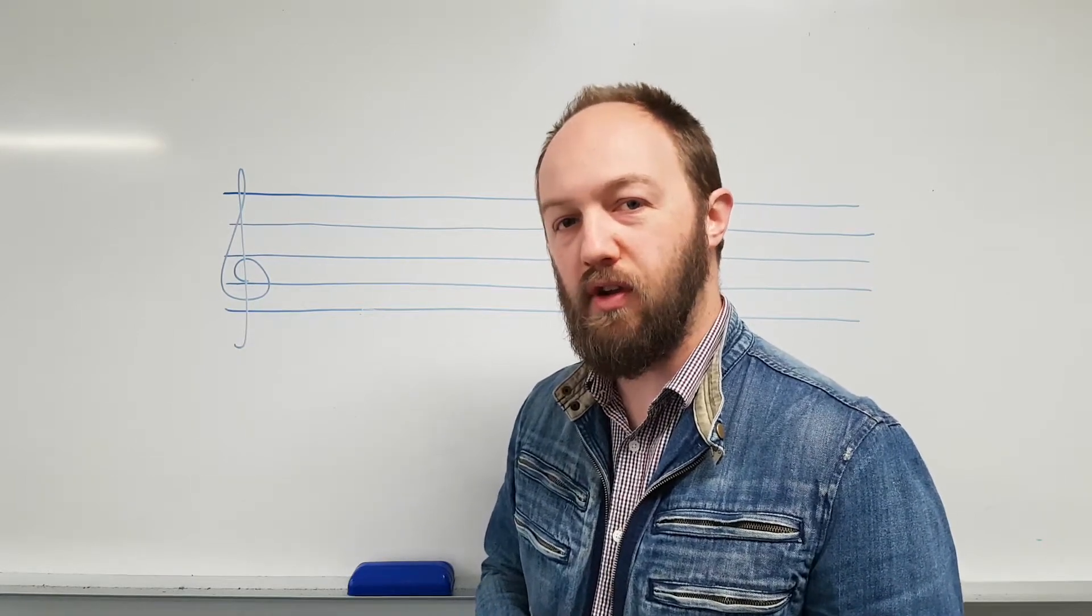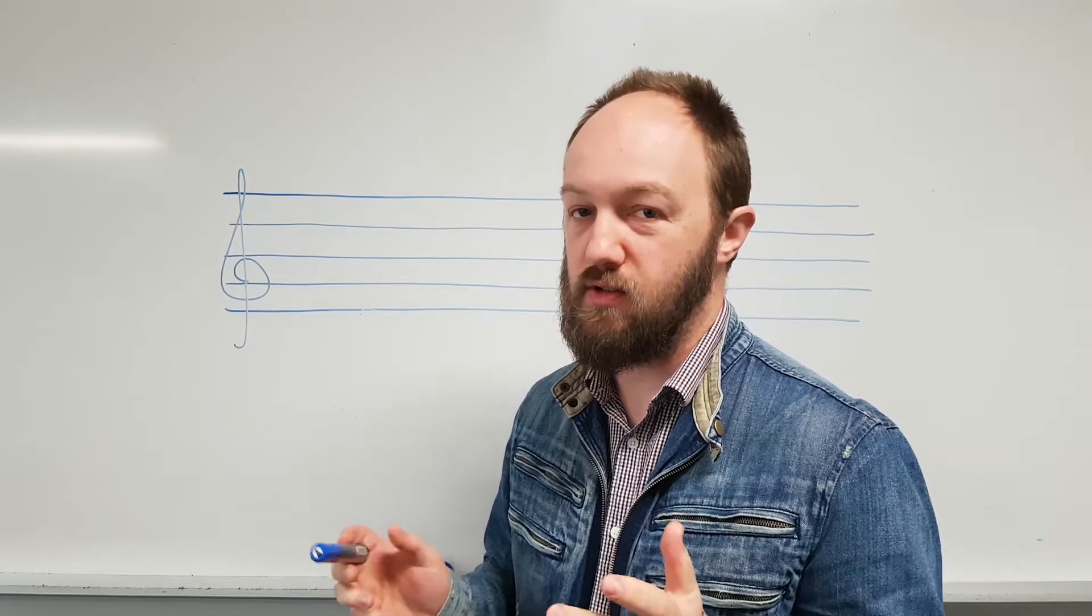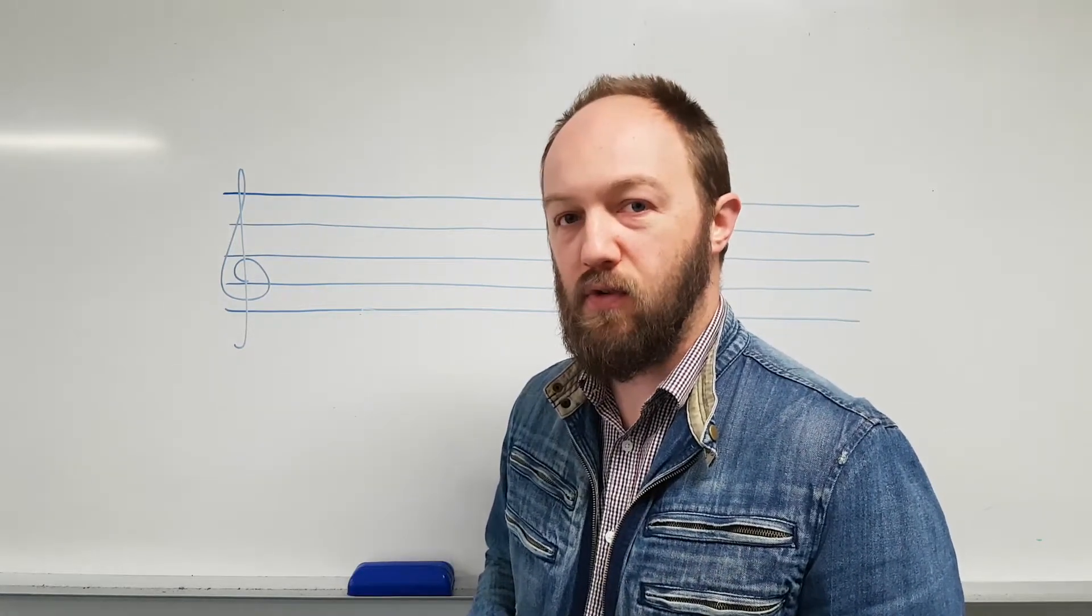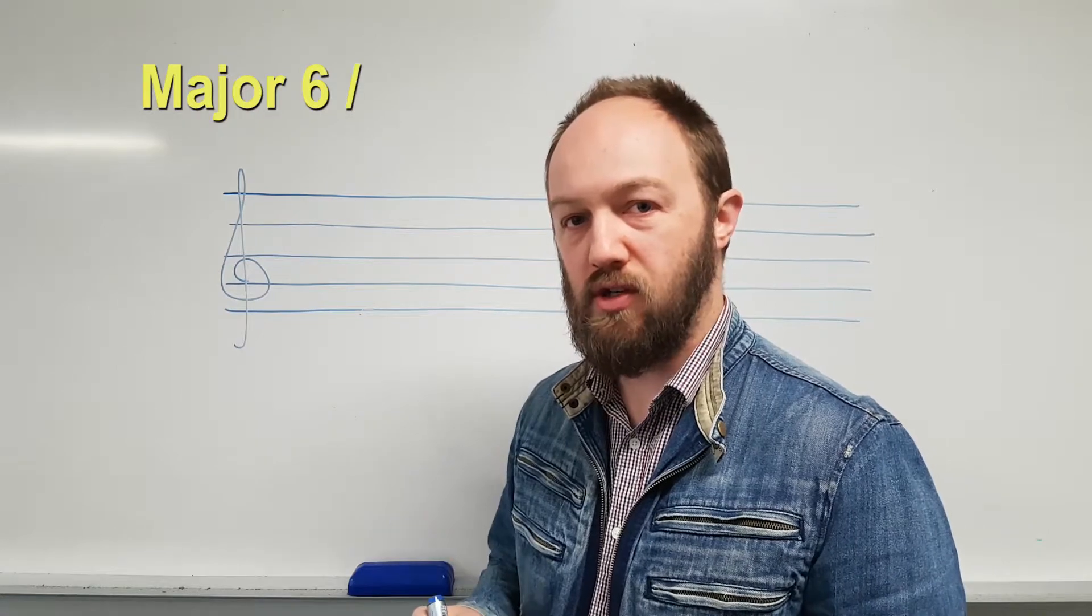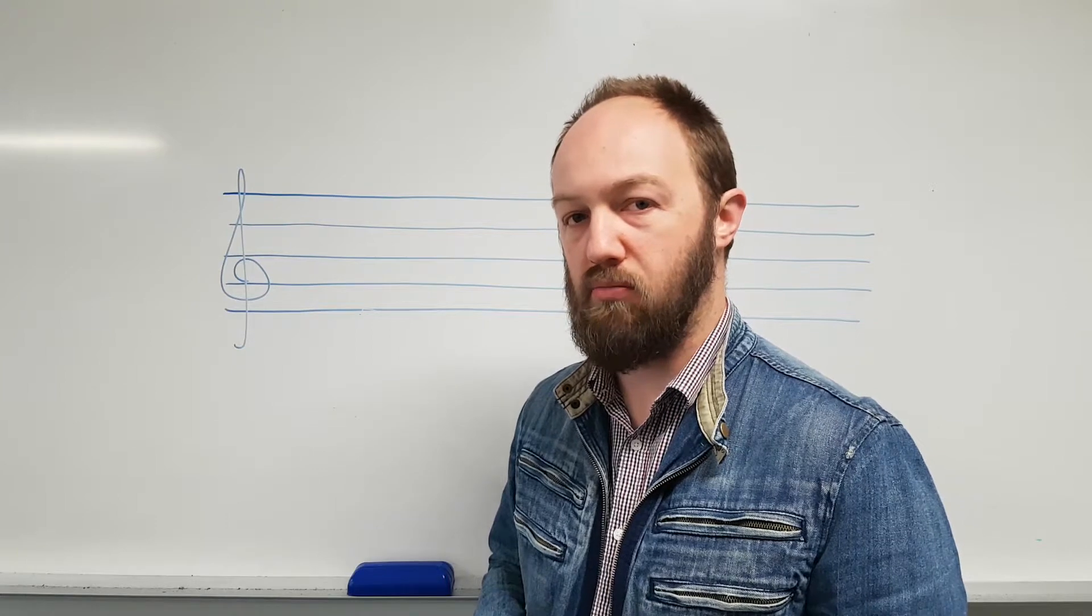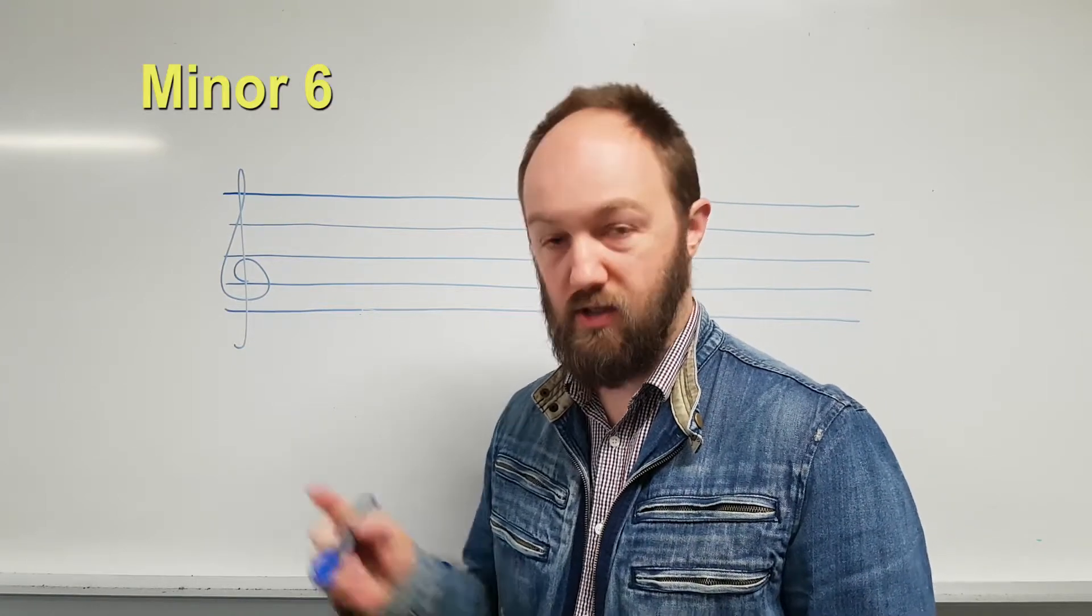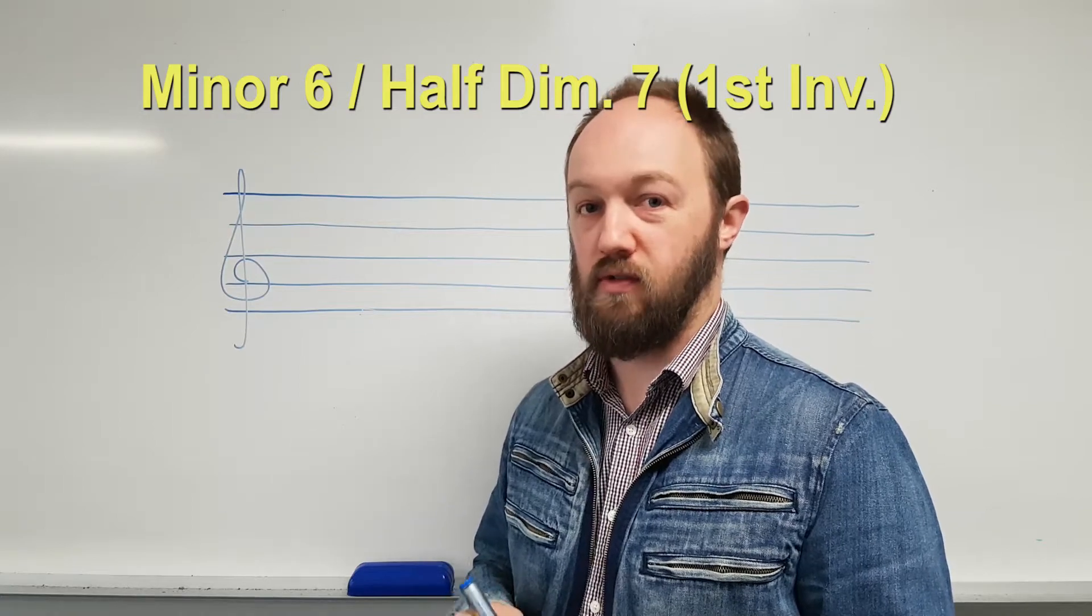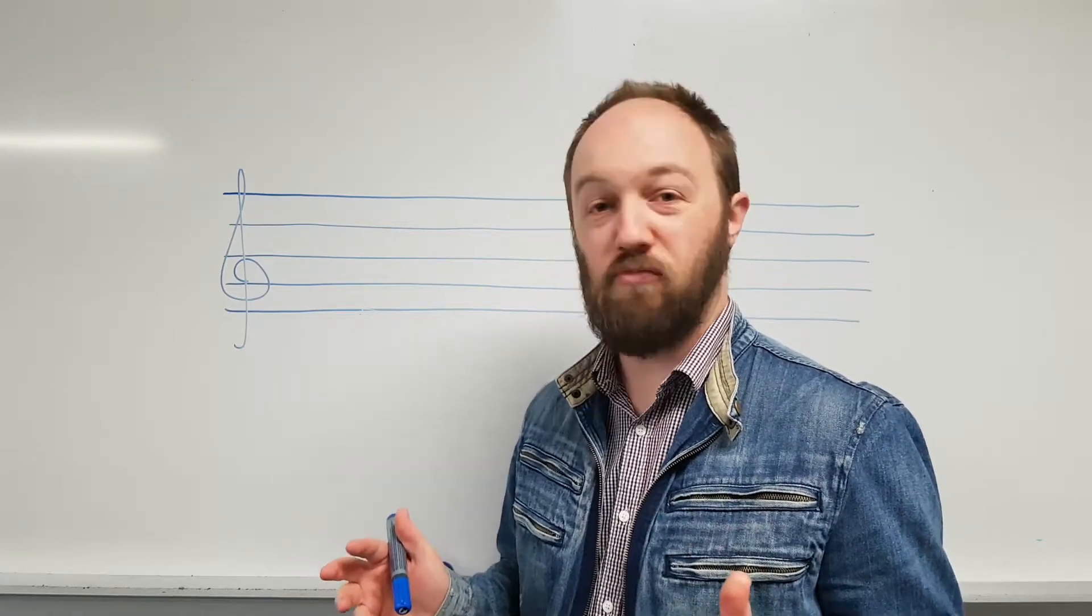So the question was, I don't understand what Musician, this is the theory program that we use, is asking for a major 6 slash minor 7 in first inversion, or a minor 6 slash half diminished 7 in first inversion. So I'm just going to show you what that's all about.